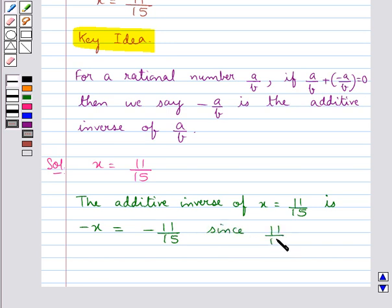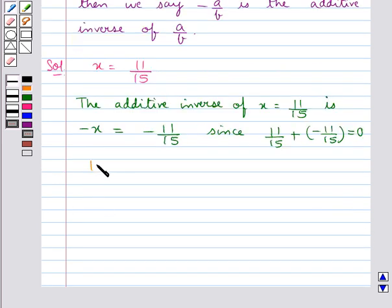11/15 + (-11/15) = 0. The same equality 11/15 + (-11/15) = 0 shows that the additive inverse